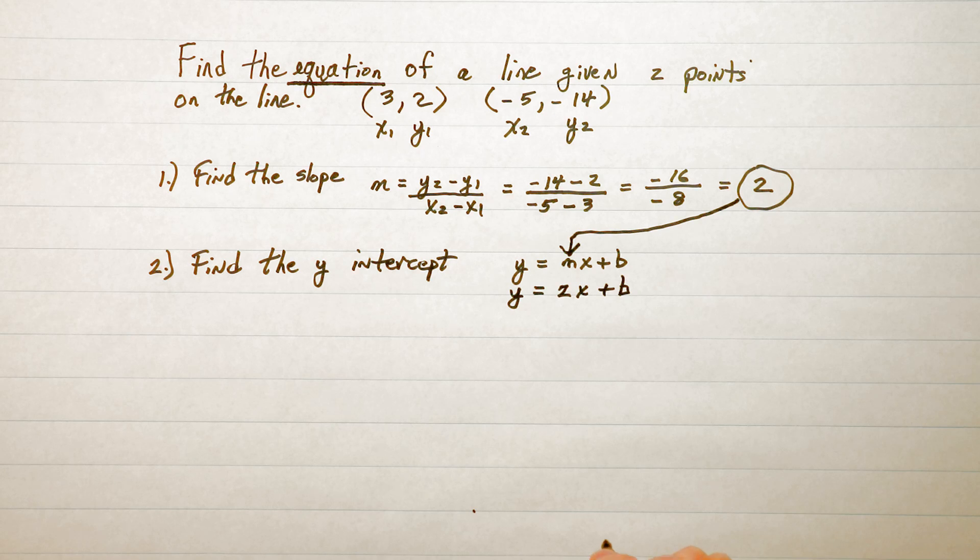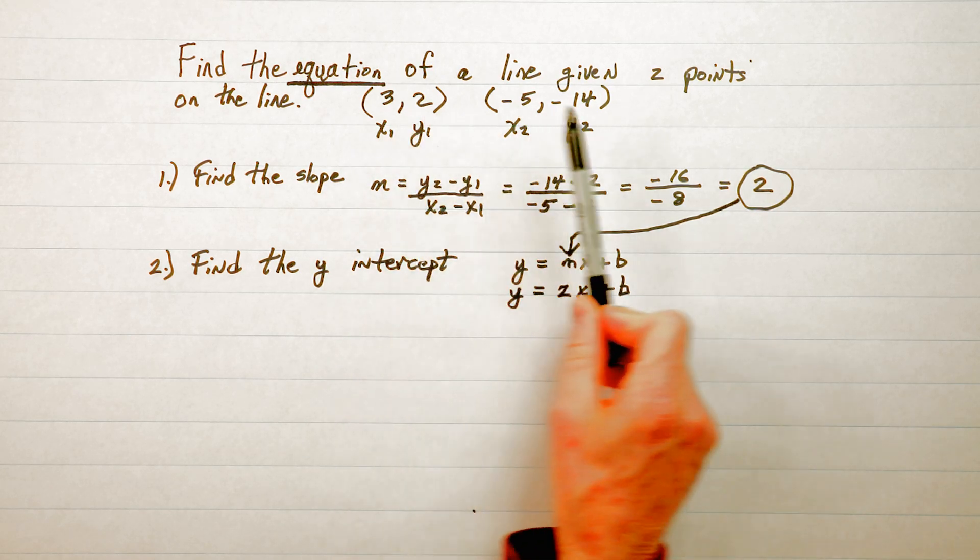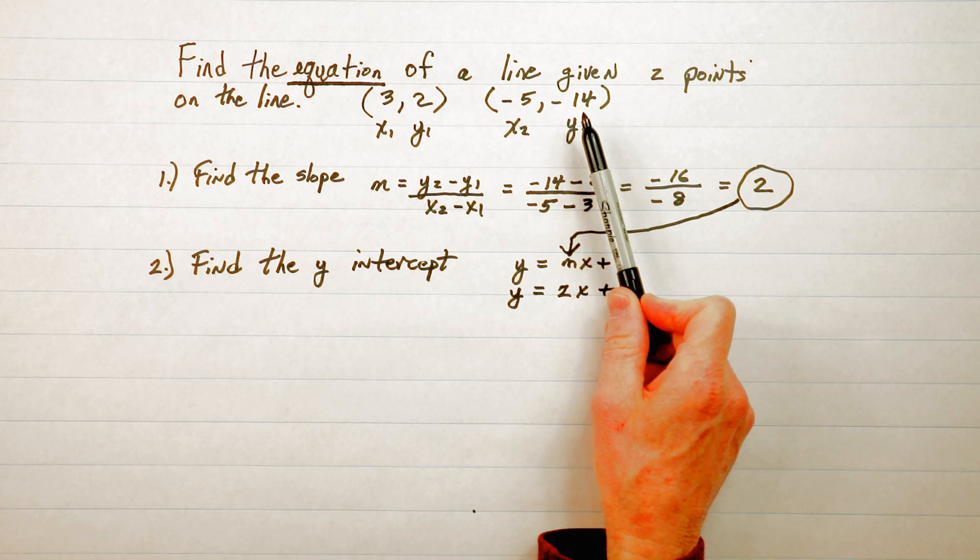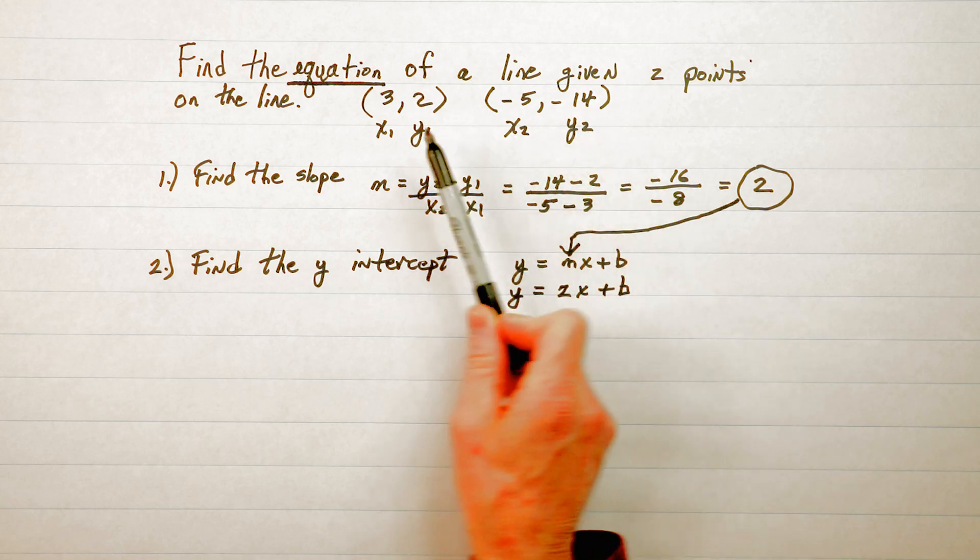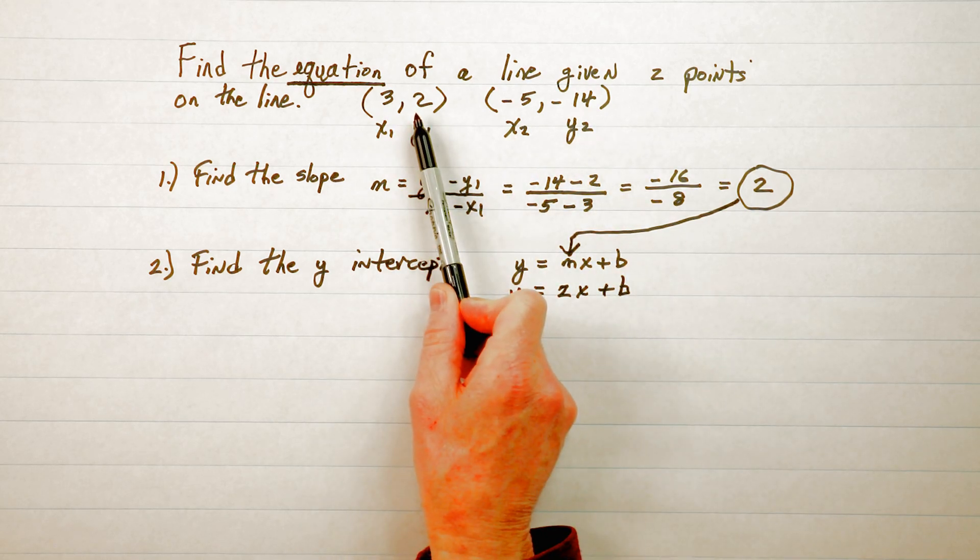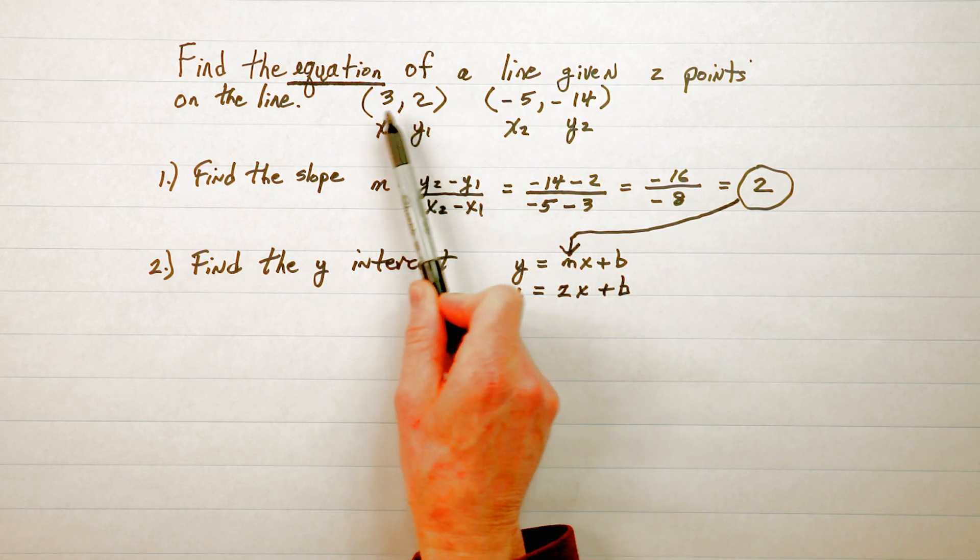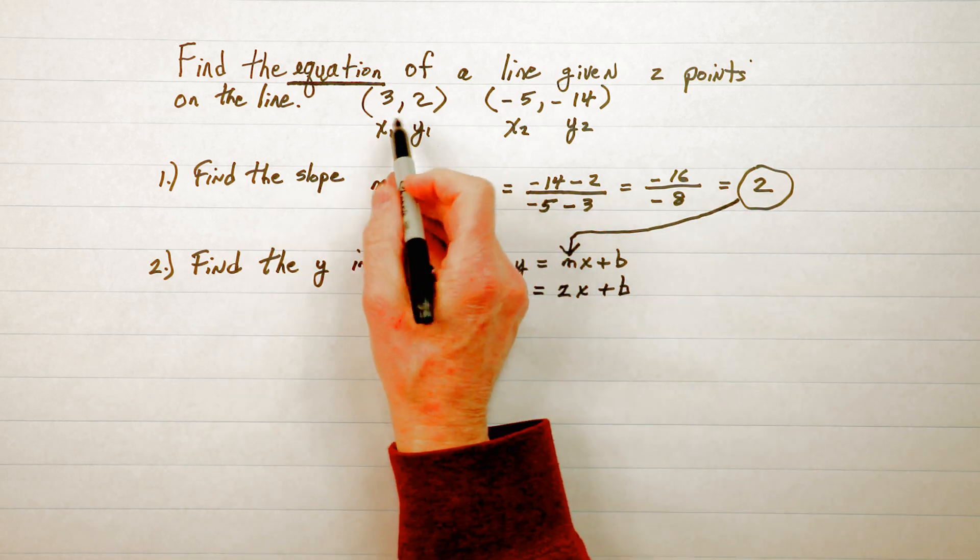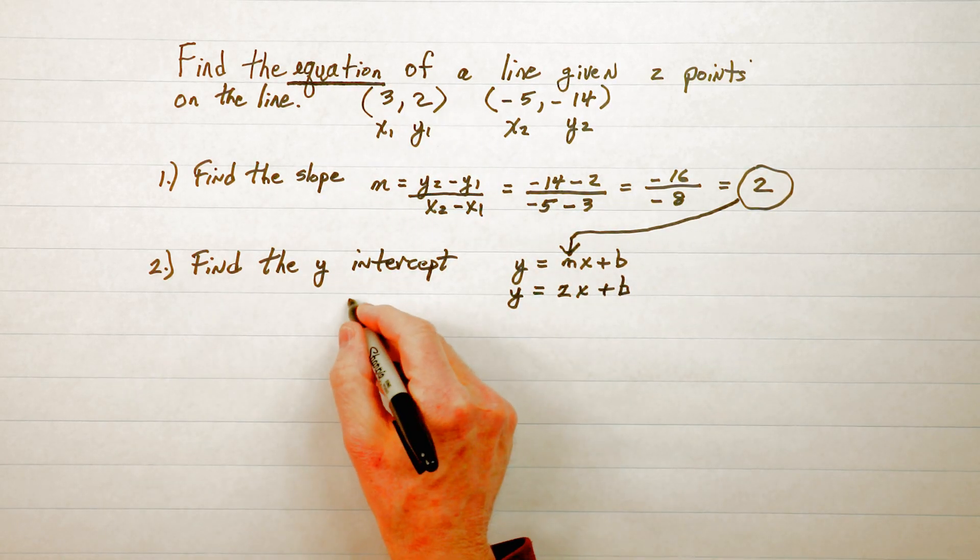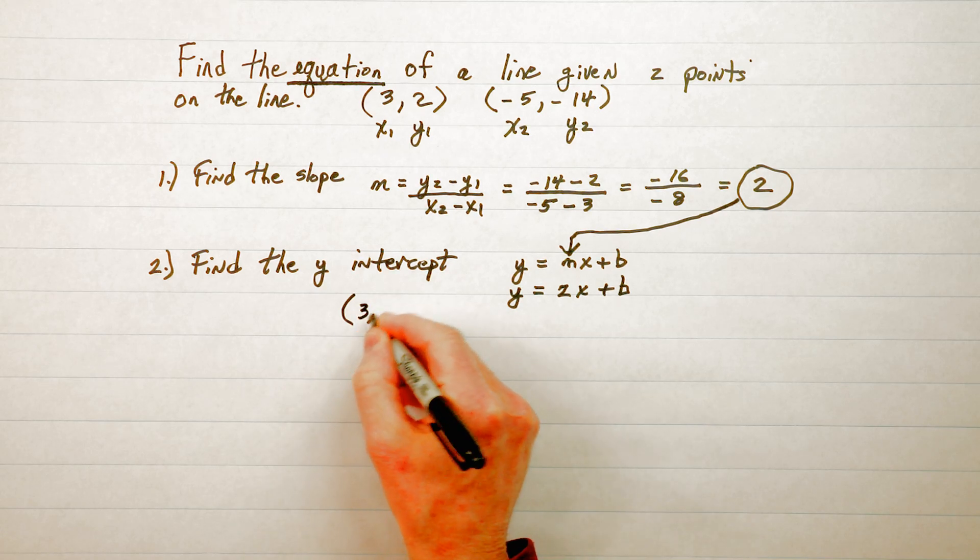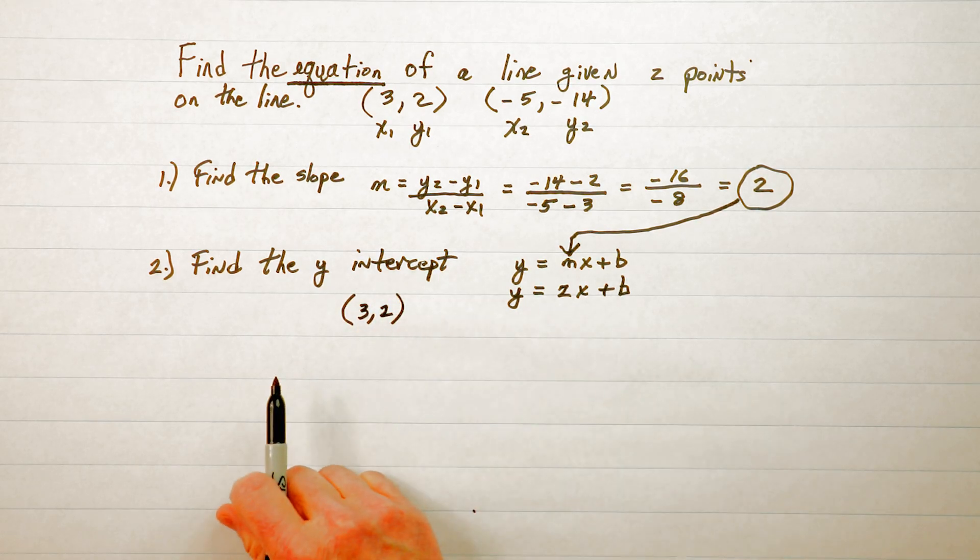The next step in this is to work with one of the ordered pairs that were given in the question. I always go for the easier ordered pair, the one with the smaller numbers and there's no negatives here. So I'm going to work with (3, 2) and I'll bring down (3, 2) down here so it's a little closer to where I'm working.